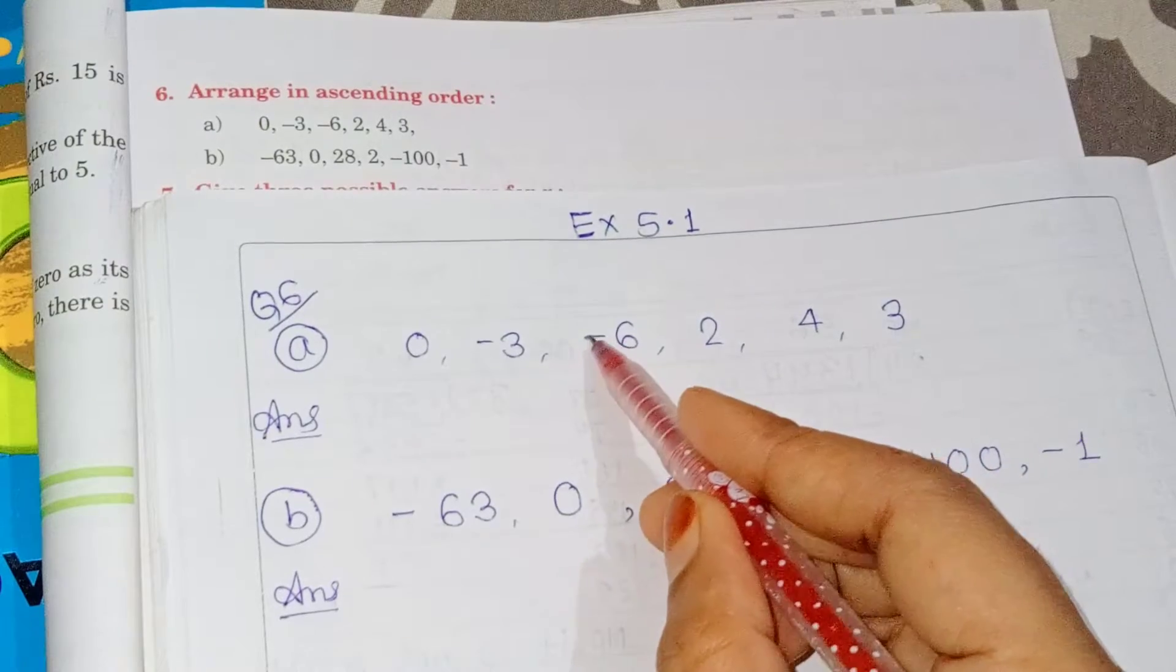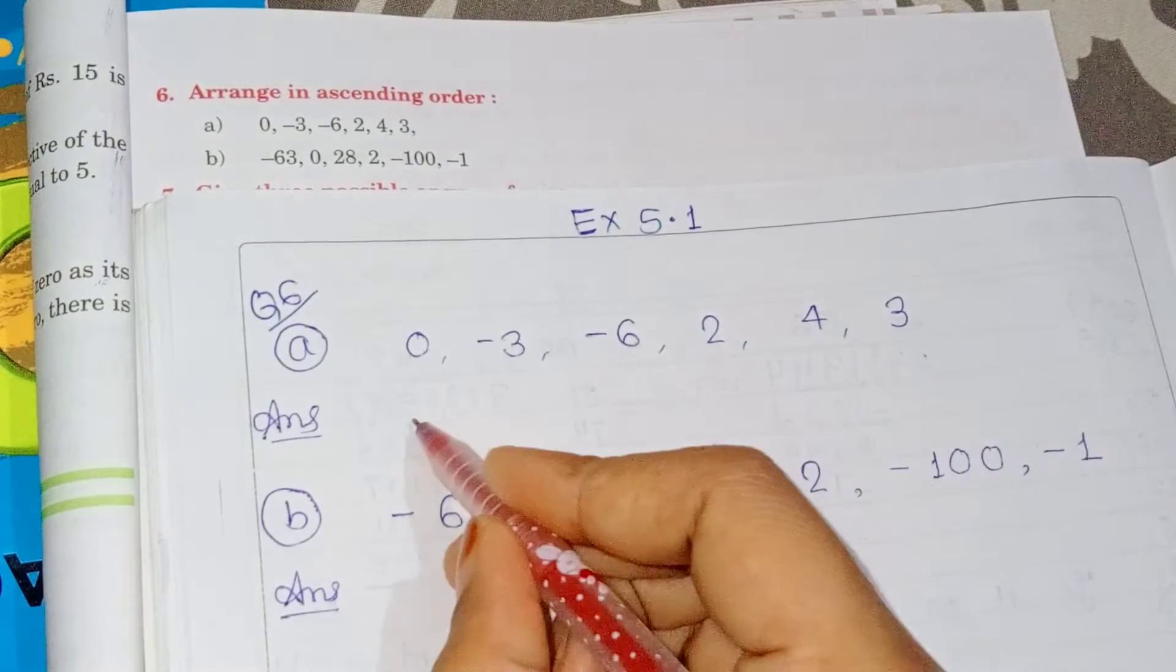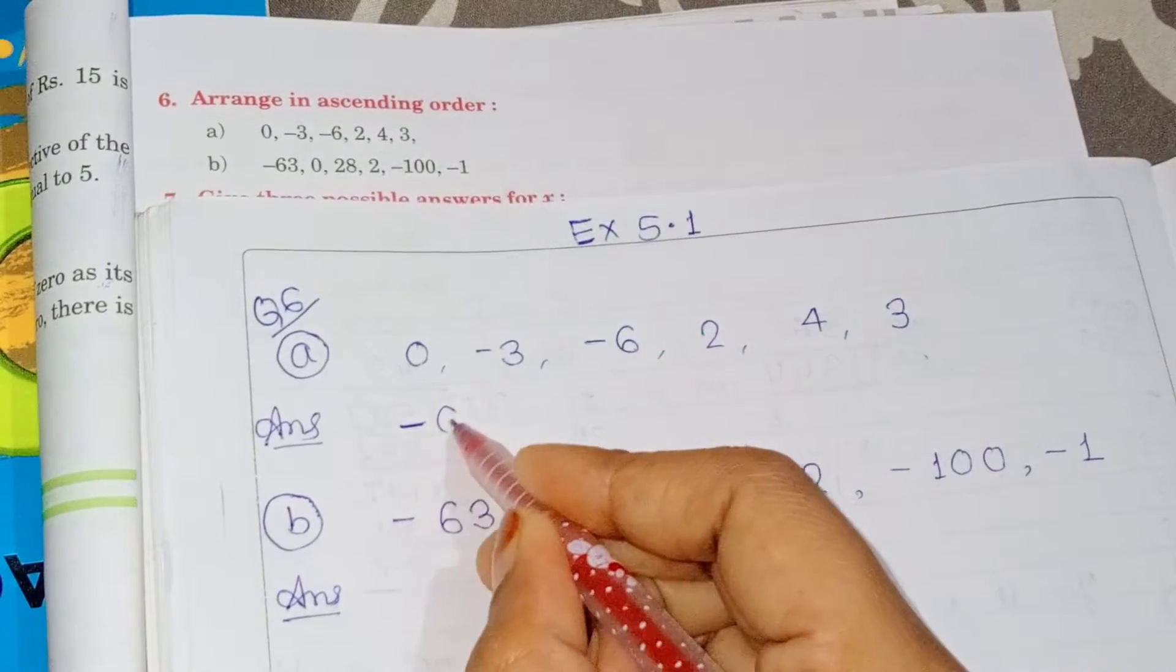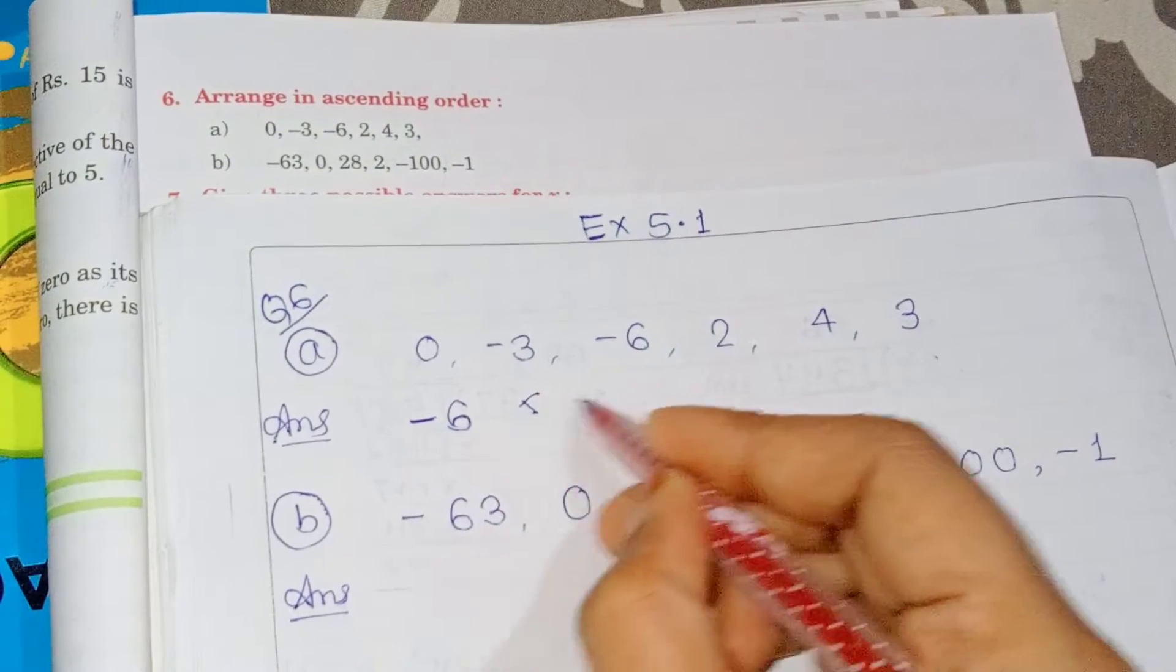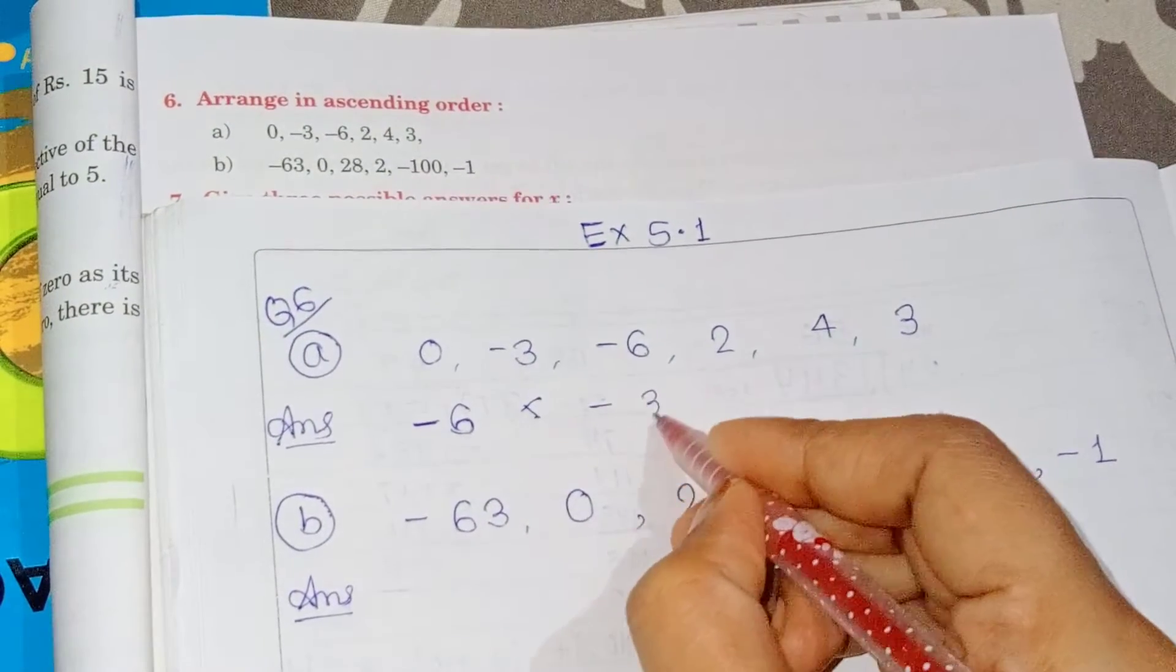Here minus 6, then minus 3, then 0, then 2, then 3, then 4. We have to arrange in ascending order.